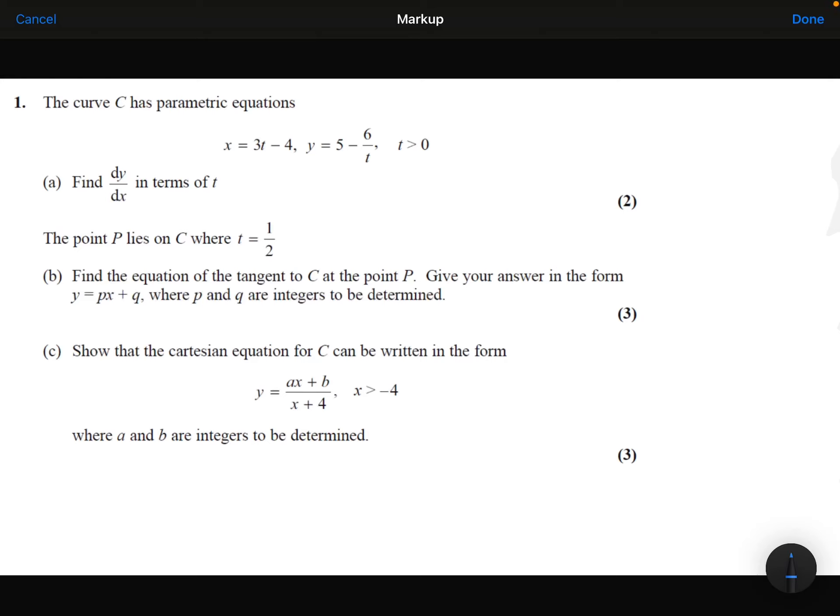The curve C has parametric equations x equals 3t minus 4 and y equals 5 minus 6 over t, where t is greater than 0. Part A: Find dy by dx in terms of t.